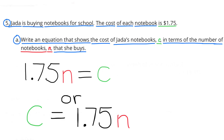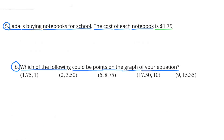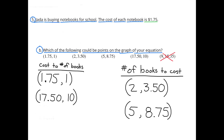Part b: which of the following could be points on the graph of your equation? Some of these fit into cost-to-number-of-books and some fit into number-of-books-to-cost, and one of them doesn't fit at all. The valid points are: ($1.75, 1 book), ($17.50, 10 books), (2 books, $3.50), and (5 books, $8.75).